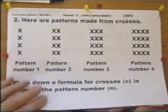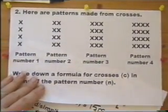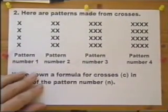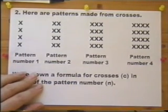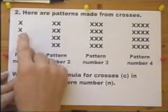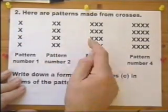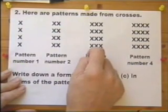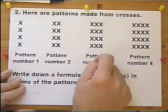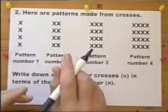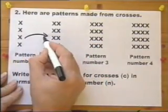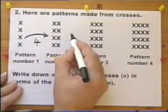Question 2. I've got some patterns made with crosses. In the first pattern we've got four crosses, in the second pattern another four crosses, eight. In the next pattern another four crosses, twelve crosses. Each time there's four more crosses.